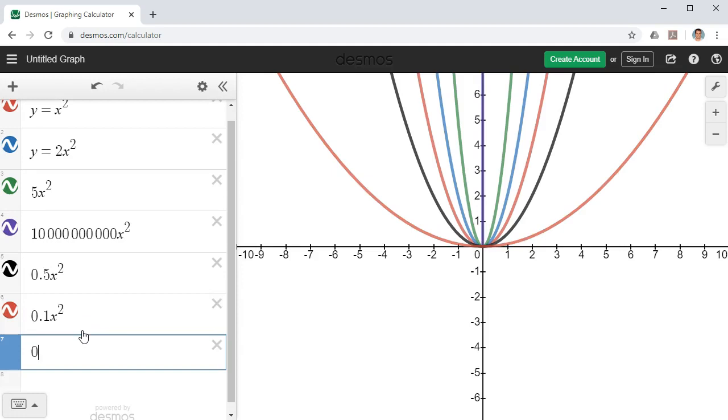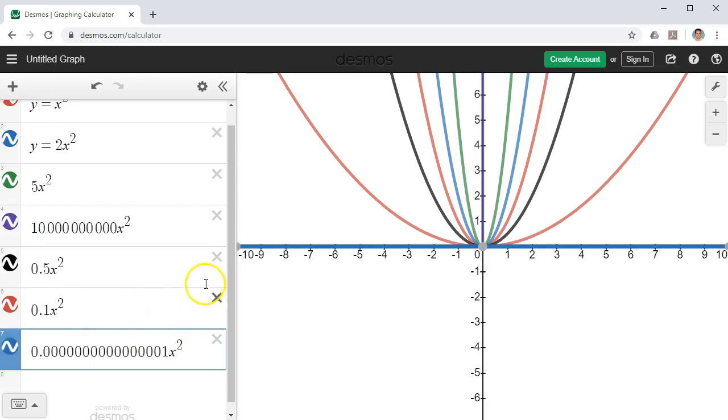In fact, I'd like to see what happens when I have an extremely small number, like this one here, x to the power of 2. And you can see that it's so wide, it's almost made a flat line. Now, if I was to zoom out on this, eventually I would see that parabolic shape coming back.